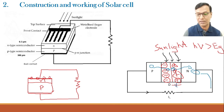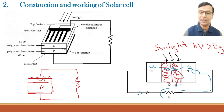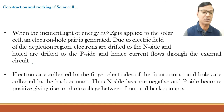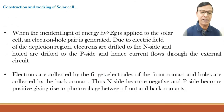Due to this drift, electrons flow towards the n-side. The conventional current flows from p to n — opposite to the direction of actual electron flow — and can be collected at the load resistor IL. Electrons are collected by the finger electrodes of the front contact and holes are collected by the back contact. When incident light of energy hν greater than band gap energy EG is applied, the electron-hole pair is generated and current flows through the external circuit.